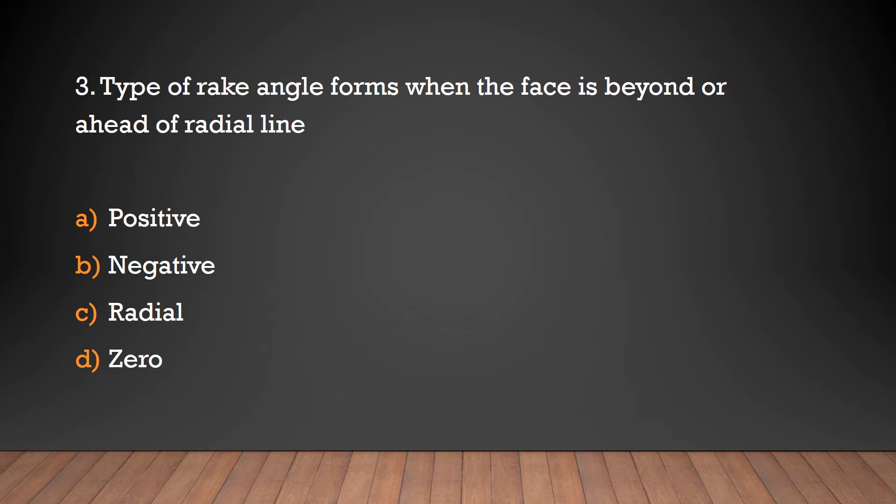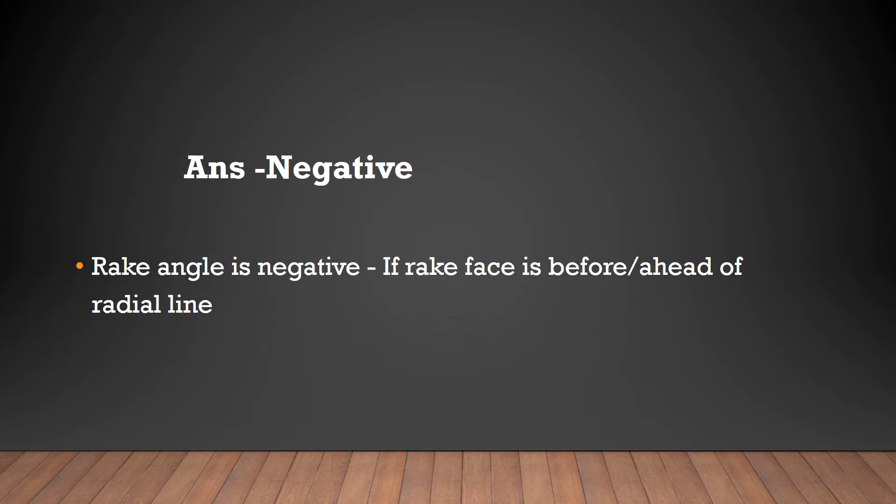Question 3: Type of rake angle that forms when the face is beyond or ahead of radial line: positive, negative, radial, or zero? Negative. Rake angle is negative if rake face is before or ahead of radial line.